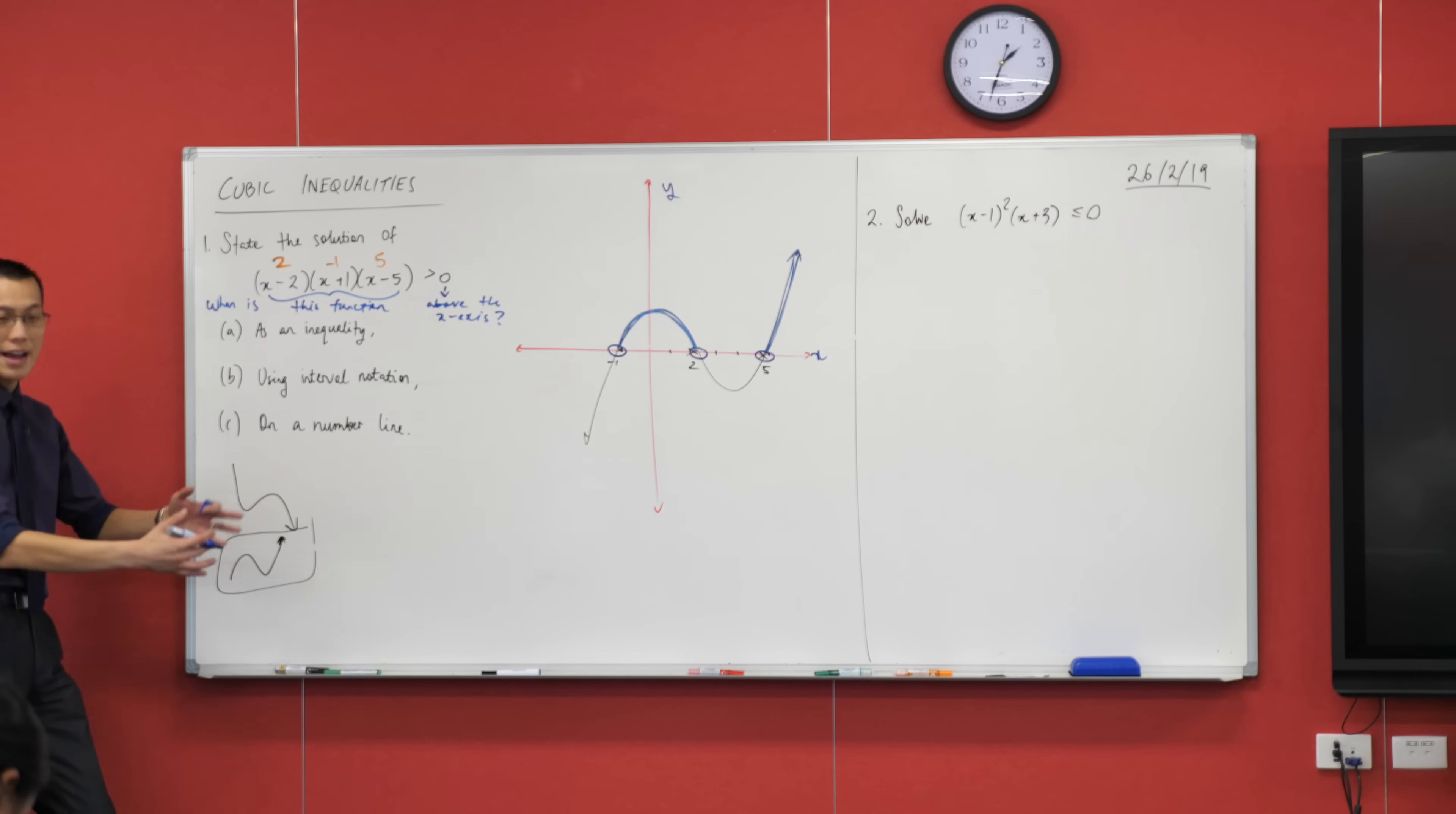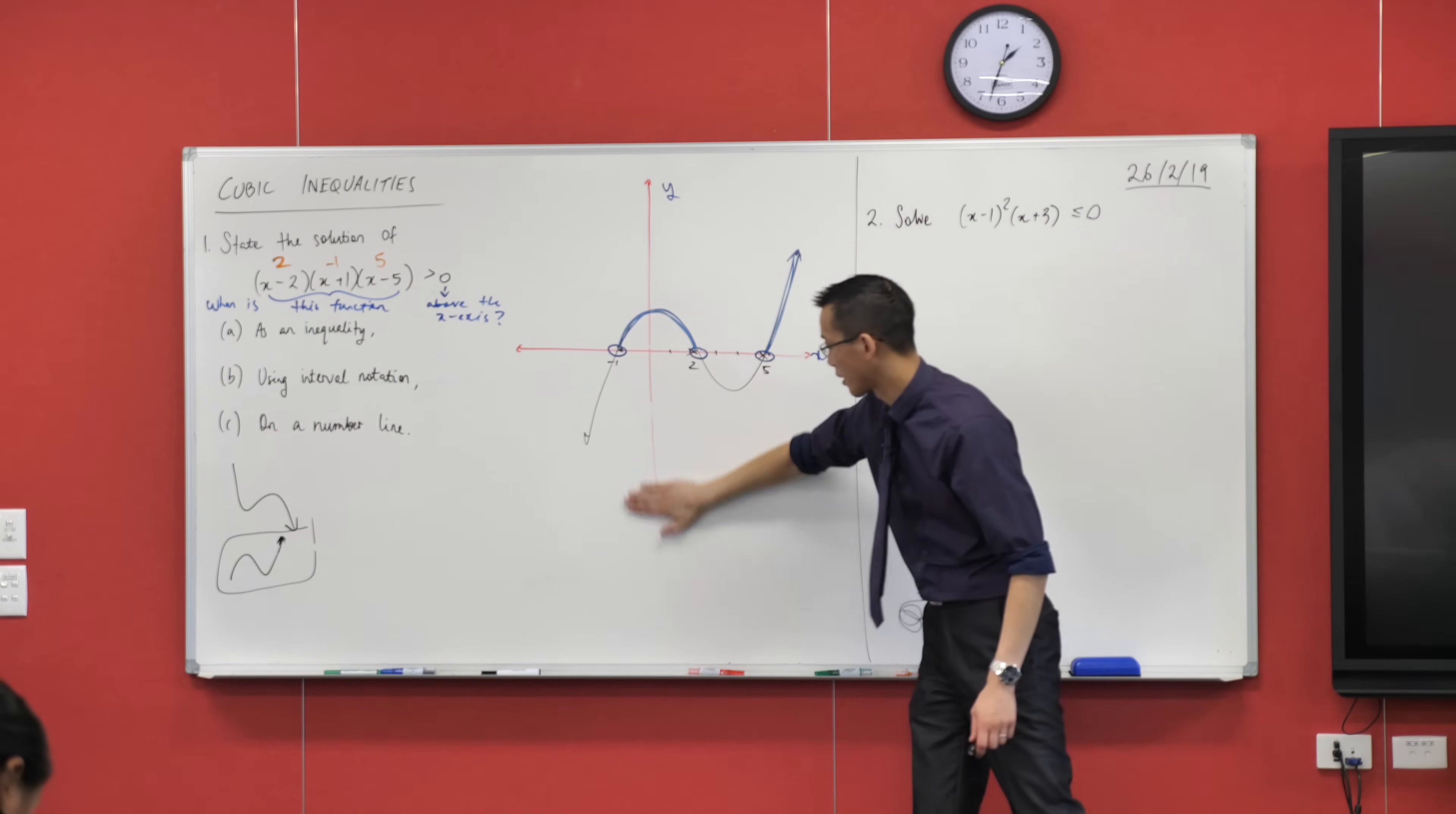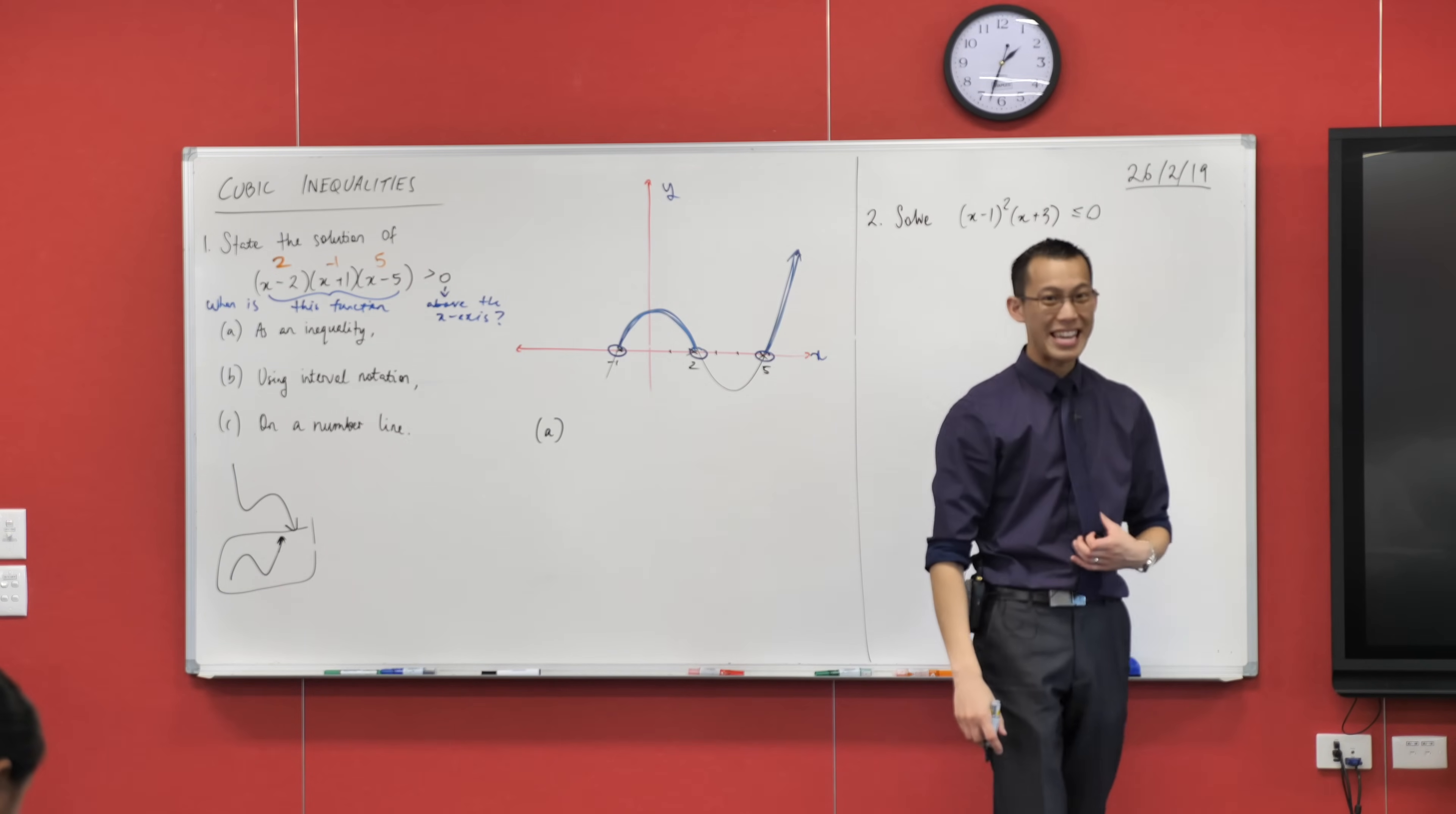All right. Now at this point, the graph has served its purpose. I've worked out when the function is above the x-axis. So I'm ready to answer these three questions and state this blue thing in the terms that they've asked for. So here we go. Part A. As an inequality.